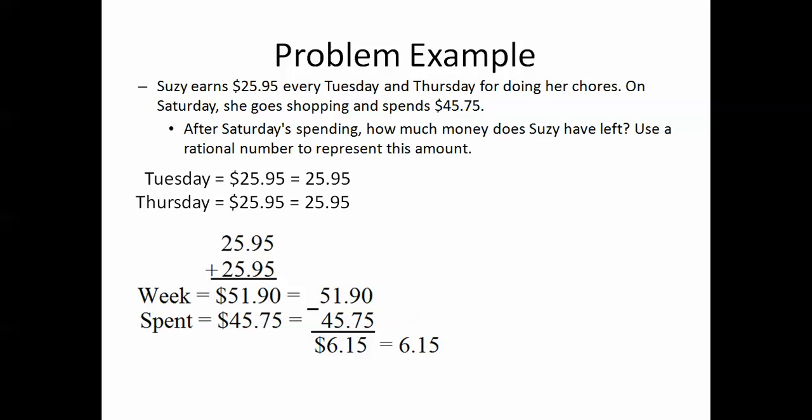So, after one week, she earns $51.90. She spends $45.75. She has $6.15 left over. And we can write that as a rational number of $6.15. Again, we must write this in a sentence. Suzy has $6.15 left after the weekend. This can be represented by $6.15.